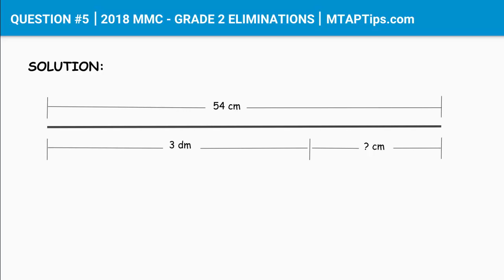As you know, we cannot subtract 3 from 54 because they have different units of measurement. So to solve this problem, first we'll have to convert the 3 decimeters to centimeters. Since 1 decimeter is equal to 10 centimeters, we just multiply 10 centimeters by 3 decimeters and we'll have 30 centimeters. So 3 decimeters is equal to 30 centimeters.